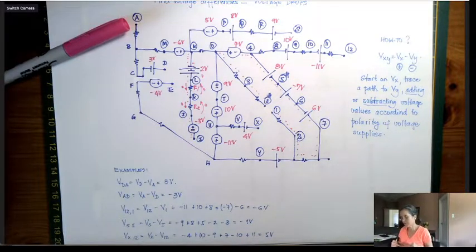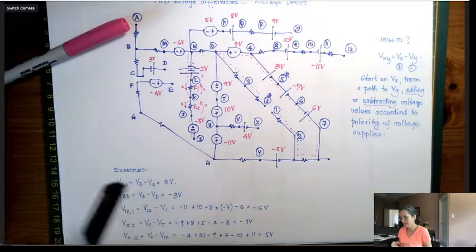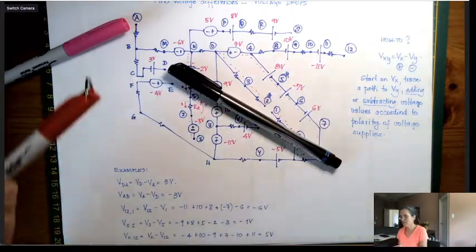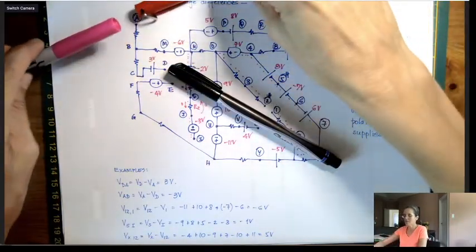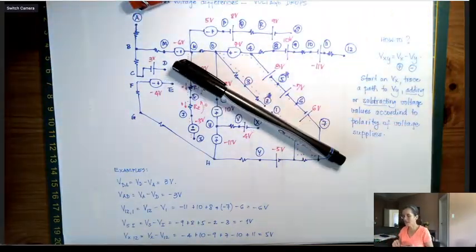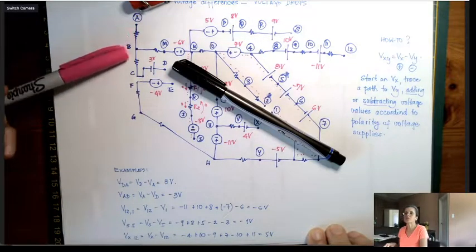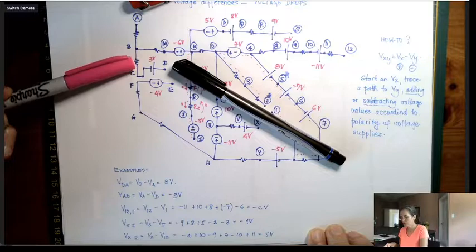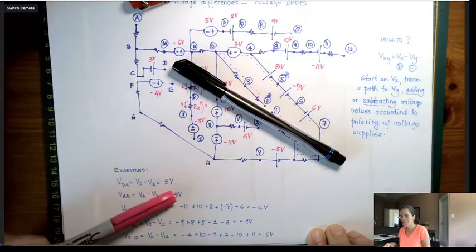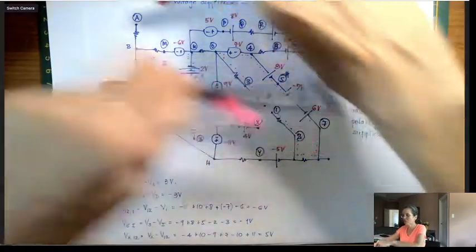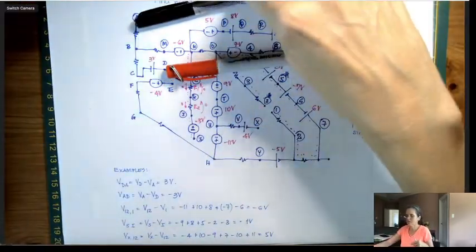A lot of this still stands. VDA and VAD, VAD is if I put the red of the multimeter on A and the black on D, I am measuring VA to D. And there is no current through this resistor and there is no current through this resistor. So really VAD is minus three volts. VDA, if I switch the voltmeter, then VDA is three volts.